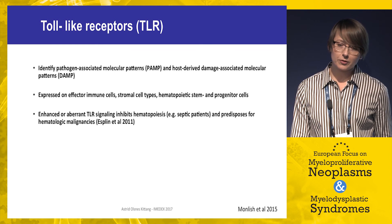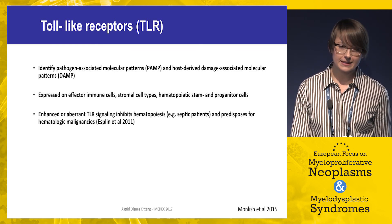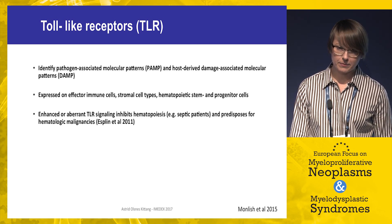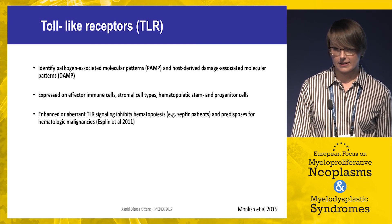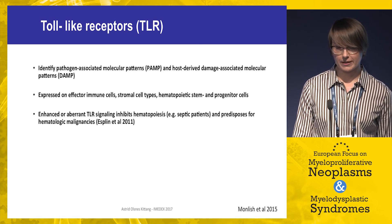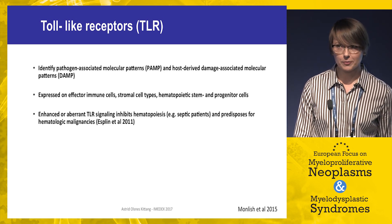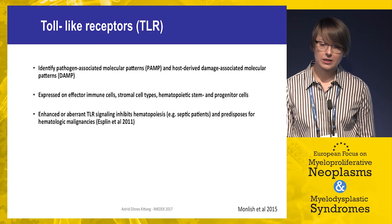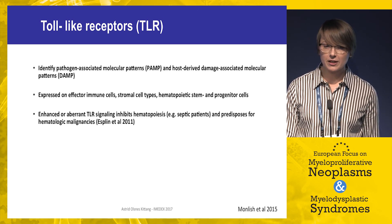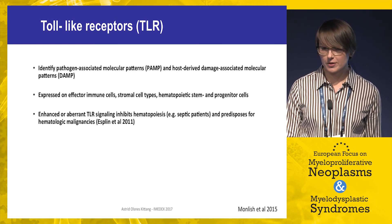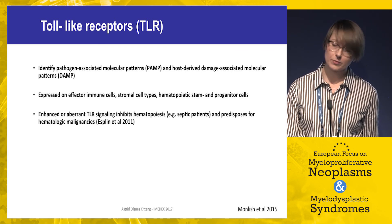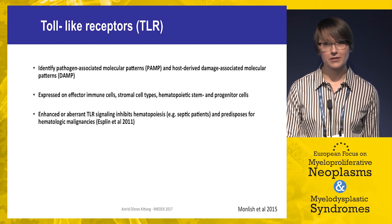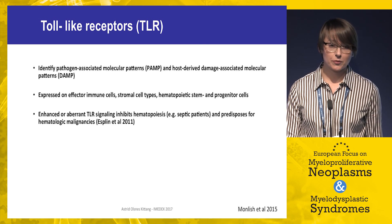Toll-like receptors are involved in the innate immune system and identify pathogen-associated molecular patterns and host-derived damage-associated molecular patterns, including the alarmins. These are important for reacting to damage and infections, and are expressed on effector immune cells, stromal cell types including endothelial cells, and hematopoietic stem and progenitor cells. Enhanced or aberrant signaling can inhibit hematopoiesis — as seen in septic patients with cytopenia — and also predisposes for hematologic malignancies.